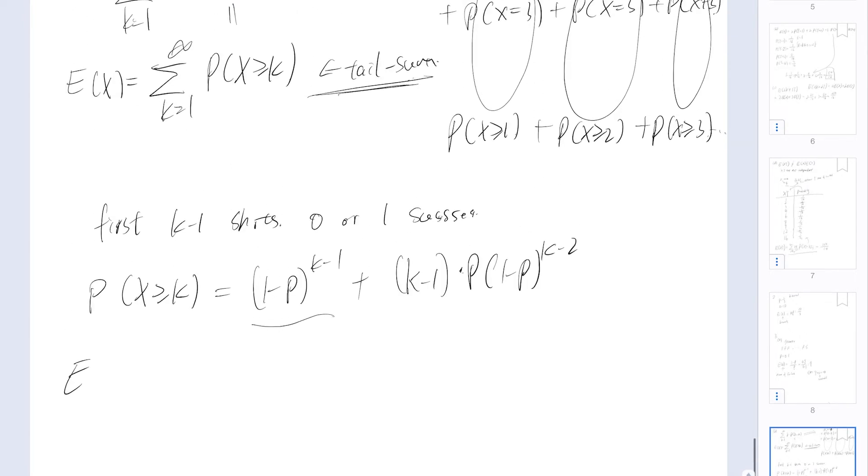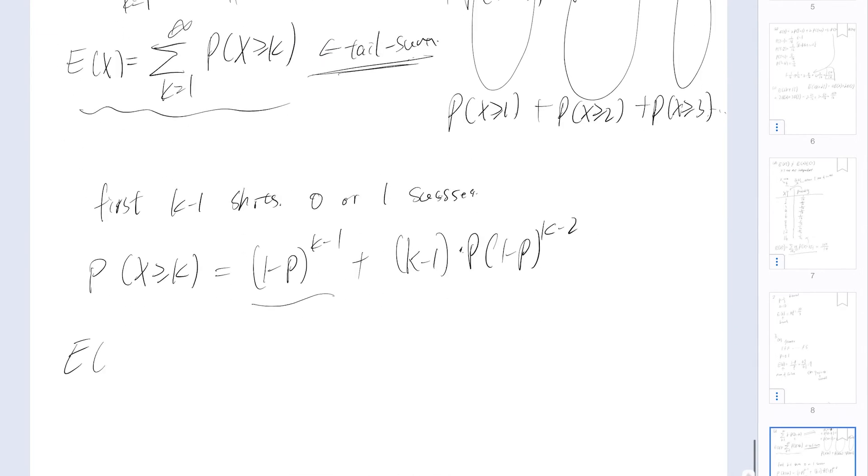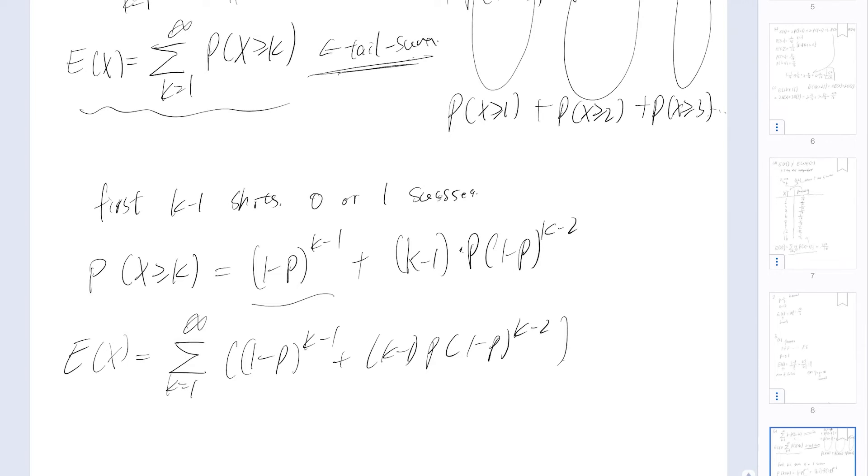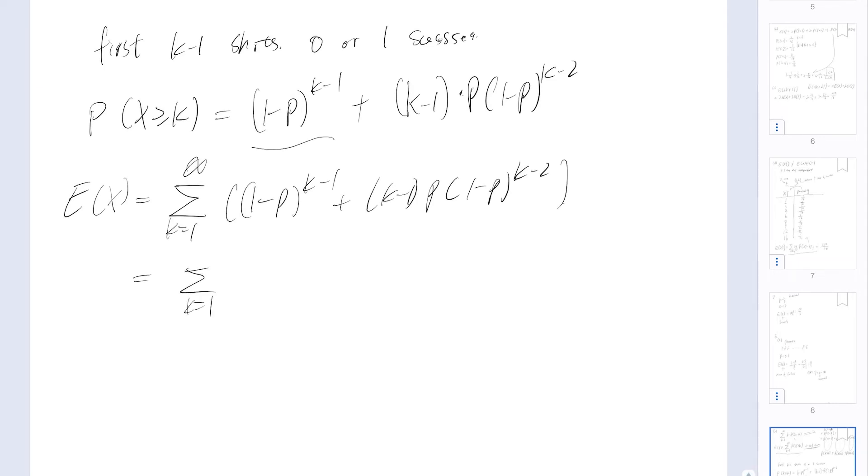So we can use the tail sum definition written here to write expected value of x as the summation of x equal to 1 to infinity that 1 minus p to the k minus 1 plus k minus 1 times p times 1 minus p k minus 2. So that's just simply plug in equations. And we can expand, split the sum into two infinite sums. And look at that, this is just a geometric series. And we know that the geometric series is just equals to 1 over 1 minus r. And r here just equals 1 minus p. So this equals to 1 minus 1 minus 1 plus p, which is just 1 over p.